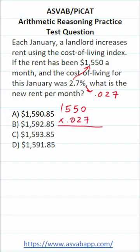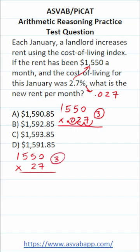In order to do this math, we have to take the decimal in 0.027 and shift it one, two, three times to the right, such that this becomes 1550 times 27, albeit with three decimals to move back to the left when we're done.